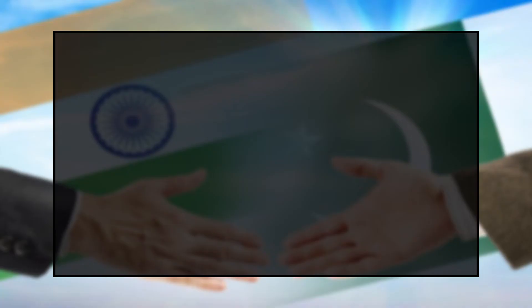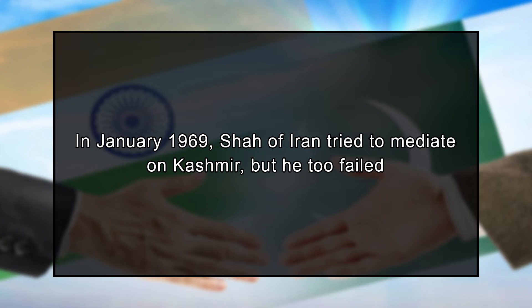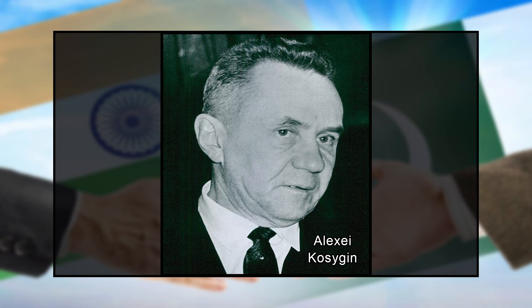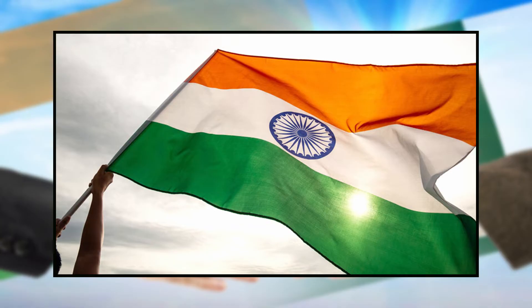In December 1968, the British Foreign Minister visited New Delhi and offered mediation on the Kashmir issue, but New Delhi rejected the offer. In January 1969, the Shah of Iran tried to mediate on Kashmir but also failed. In May 1969, Russian Prime Minister Kosygin visited Pakistan and presented a new formula of softening the border, but Pakistani leaders did not accept it. In July 1969, American President Nixon visited New Delhi with a proposal, but Indian leaders rejected it too.